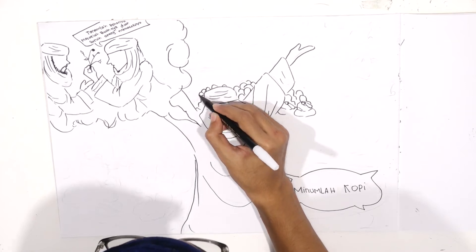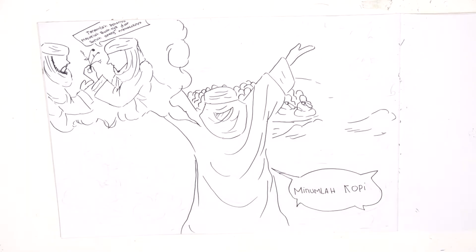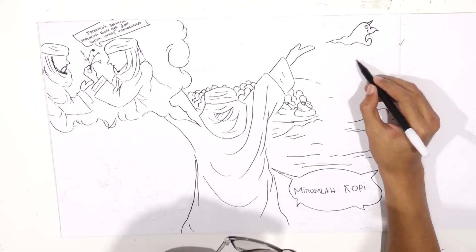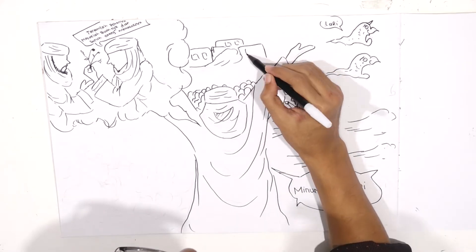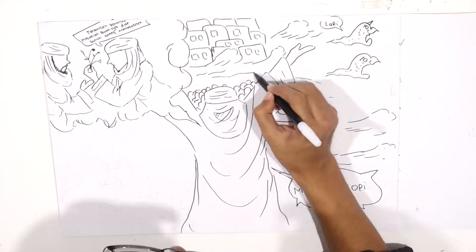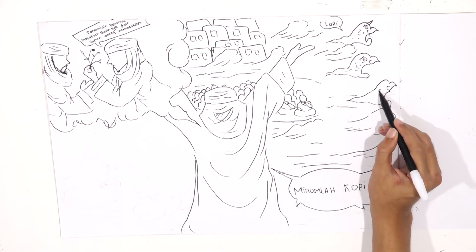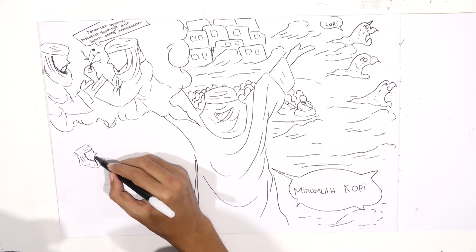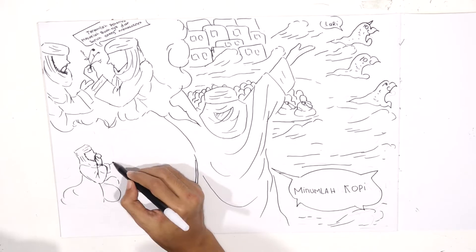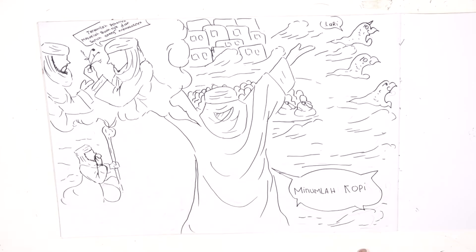Beliau menganjurkan orang-orang menanam pohon kopi dan menjadikan biji buahnya sebagai minuman. Sejak saat itu, gangguan jin mulai reda di atas bumi. Habib Ali bin Muhammad Al-Habshi pernah mengisahkan karamah Syekh Abdul Hassan As-Sazili sebagai berikut.